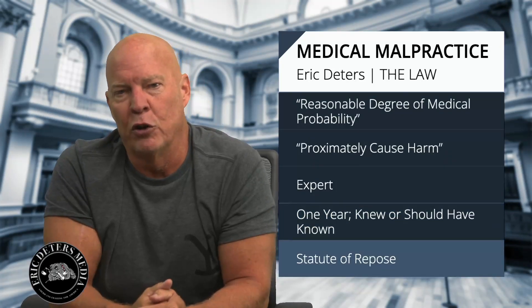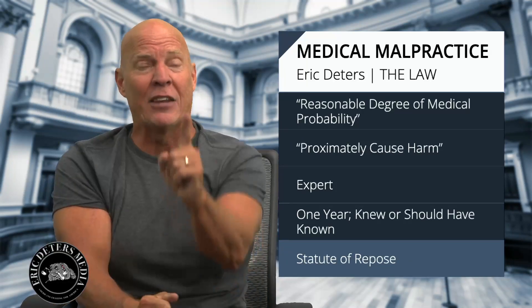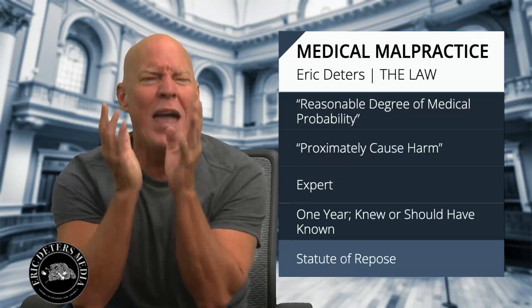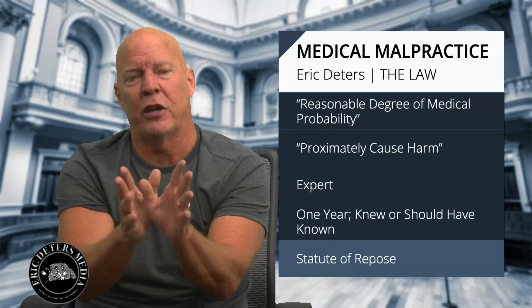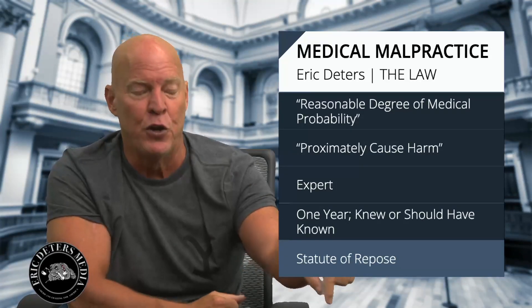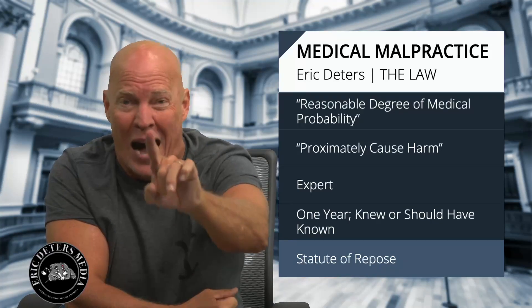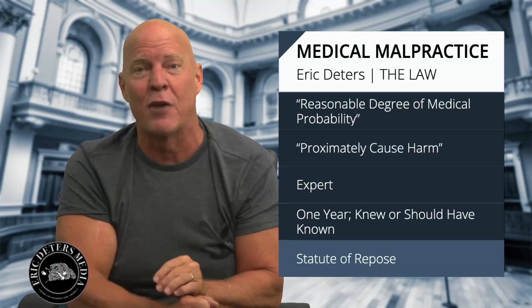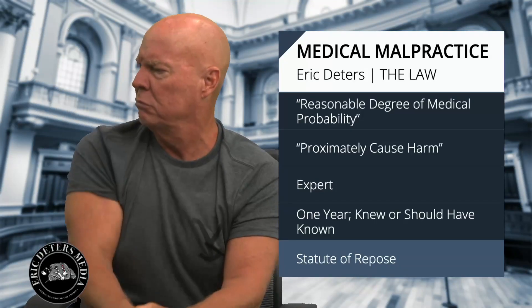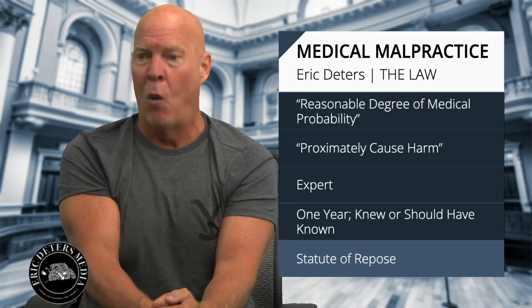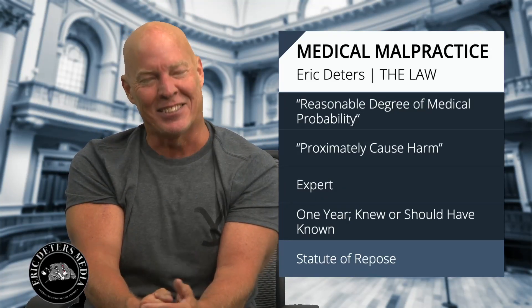This is the tragedy of the greatest proportion — the statute of repose. The statute of repose says that no matter when you find out about your medical malpractice, if you don't file the claim within four years of the event, you're out of luck. That's the Ohio statute of repose. A lot of states like Kentucky have found that unconstitutional, but it's not unconstitutional in Ohio — because they have a Republican Ohio Supreme Court.